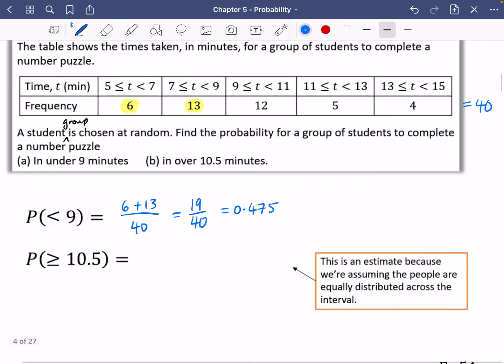This is where things get a little bit more interesting. It says in over 10.5 minutes. Clearly these five people and these four people, these five groups and four groups, they took more than 10.5 minutes because their groups are more than 11 minutes and more than 13 minutes. But we think that some people inside this group probably did it in over 10.5 minutes. We don't know, so we're going to have to estimate how these people were distributed. We're going to be doing an estimate because we're assuming that the people are equally distributed across this interval.